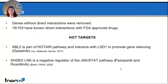From those 100 genes, we eliminated all genes modulated by drugs still in discovery state, and focused only on drugs already FDA-approved. Among the 19 genes that resulted, I would like to introduce two of them — ABL2 and SH2B3 — because they were independently validated by other studies performed on different kinds of cancer. ABL2 is part of the HOX hair pathway known to collaborate with LSD1 to promote gene silencing. In gastric cancer, it has been shown that inhibition of ABL2 by imatinib together with inhibition of LSD1 results in inhibition of tumor growth in vivo. SH2B3 is a negative regulator of the JAK/STAT pathway, and it has been shown that in myeloid leukemia, inhibition of SH2B3 by ruxolitinib together with LSD1 inhibition results in reduction of the number of myeloid cells in circulation.